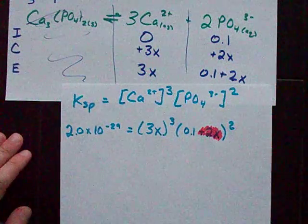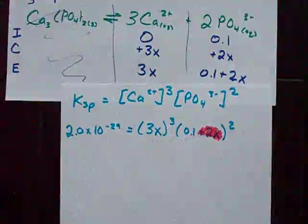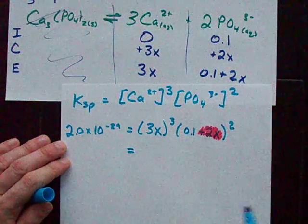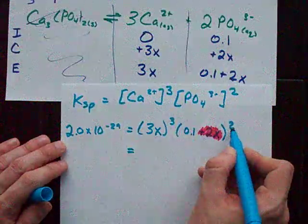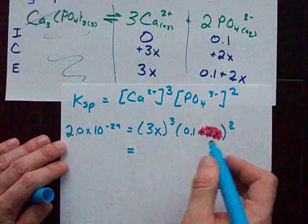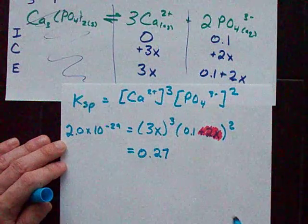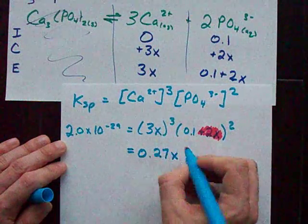Let me simplify this expression for you a little more. 3 cubed is 27 times 0.1 squared, which is 0.01. When you multiply those together, you get 0.27, and you're left with an x cubed.